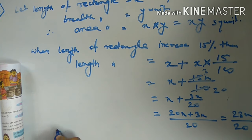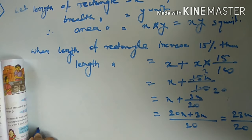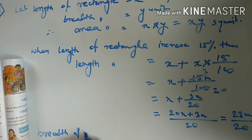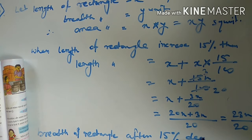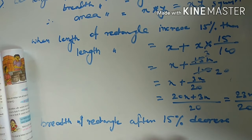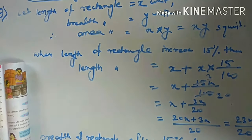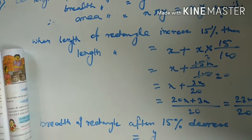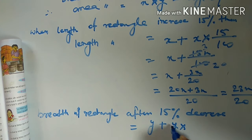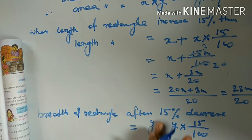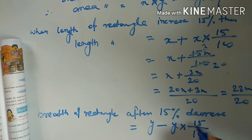Similarly, we will find the new breadth. Breadth of rectangle after 15% decrease — the original breadth is y units. So the new breadth equals y minus 15% of y, that is y minus y into 15 by 100. Since it is a decrease, we subtract. So breadth equals y minus y into 15 by 100.